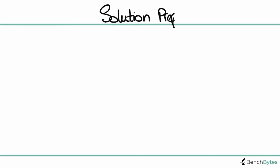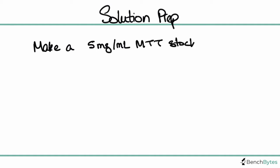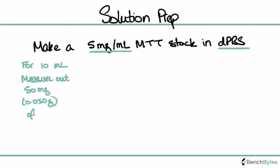The first thing you'll need to do is prepare your MTT stock solution. This stock solution is made by making a 5 mg/mL MTT stock in DPBS. For a 10 mL stock solution, you're going to measure out 50 mg, which is the same as 0.050 grams of your MTT powder.